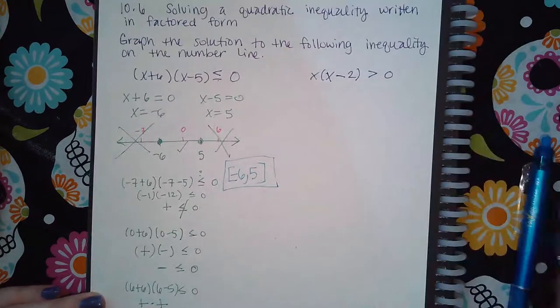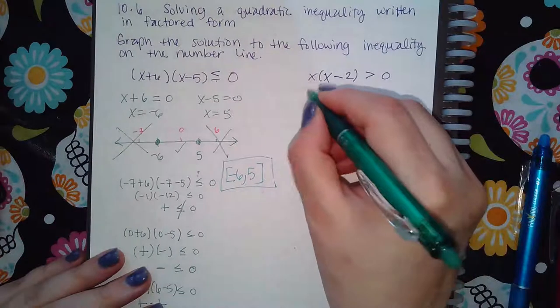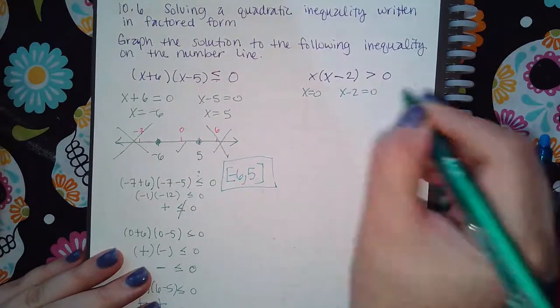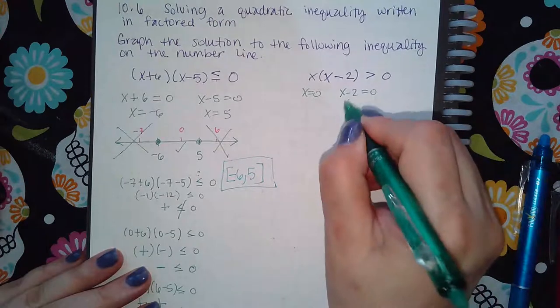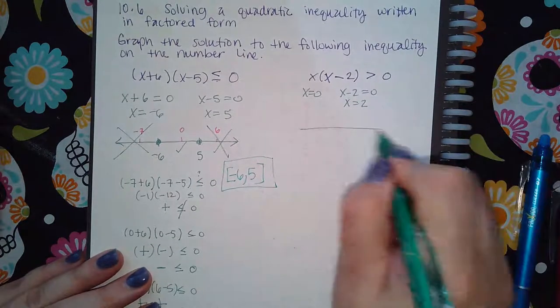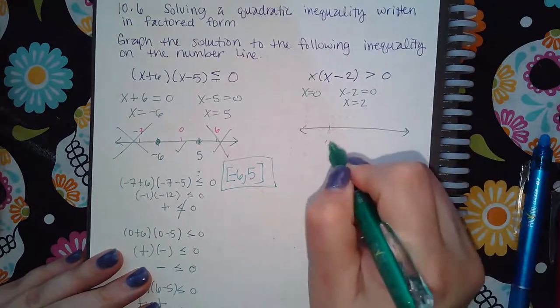Now for this one, I'm going to do the same thing. I'm going to set this factor equal to zero. I'm going to set this factor equal to zero. That one's already solved for here. I get two. So if I draw my number line, here's zero, here's two.